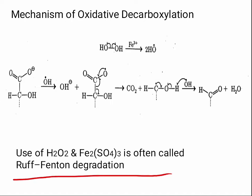The use of H₂O₂ and Fe₂(SO₄)₃ is often called Ruff-Fenton degradation. In the case of classic Fenton degradation, that was ferrous sulfate. But since ferric sulfate is used here rather than ferrous sulfate, this is called Ruff-Fenton degradation.